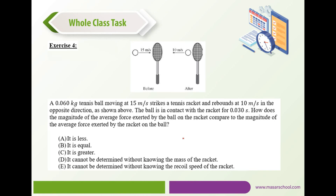Exercise 4: a 0.06 kg tennis ball moving at 15 m/s strikes a racket and rebounds at 10 m/s in the opposite direction. The ball is in contact with the racket for 0.030 seconds. The magnitude of the average force exerted by the ball on the racket equals the magnitude of the average force exerted by the racket on the ball, because according to Newton's Third Law these forces act on different bodies at the same time.